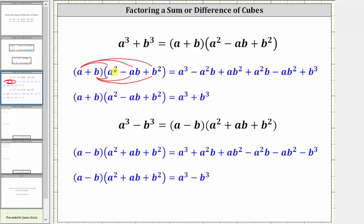Distributing a, we have a cubed minus a squared b, and then plus ab squared. Now distributing b, we have plus a squared b, then minus ab squared, and finally plus b cubed. Simplifying, negative a squared b plus a squared b is zero, and ab squared minus ab squared is zero, leaving us with a cubed plus b cubed, verifying the formula works.